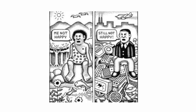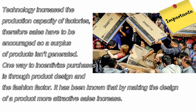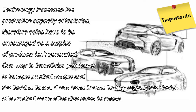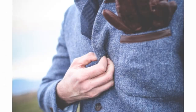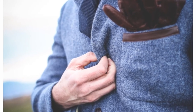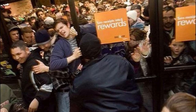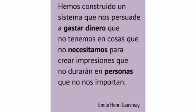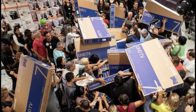Finally, we have rampant consumerism and planned obsolescence. Technology increases the production capacity of factories, so sales have to be encouraged to avoid a surplus of products. One way to incentivize purchases is through product design and the fashion factor. By making the design of a product more attractive — even if its quality is not improved — sales increase. The clearest example is the textile industry: by changing the colors and shapes of a garment, even minimally, people will buy new products. Many say this need to purchase products is reducing human beings to mere consumers of objects that satisfy whims rather than real needs.